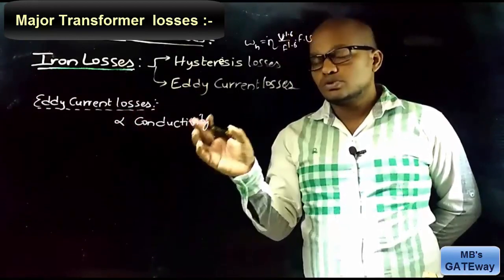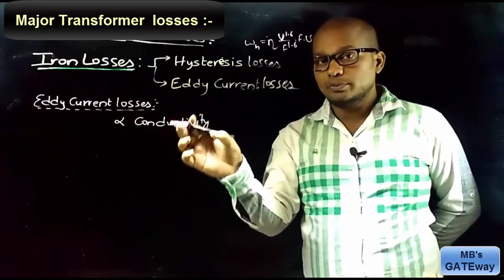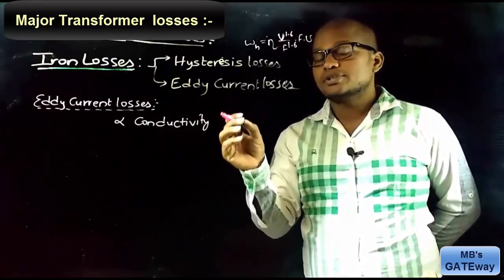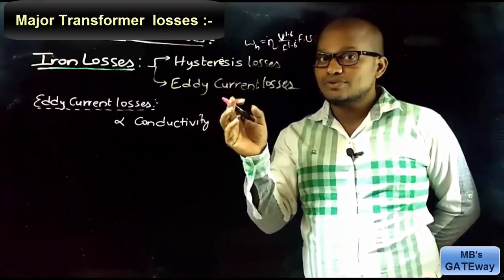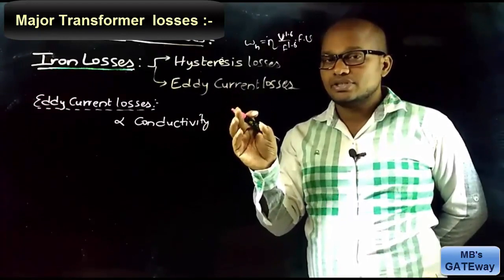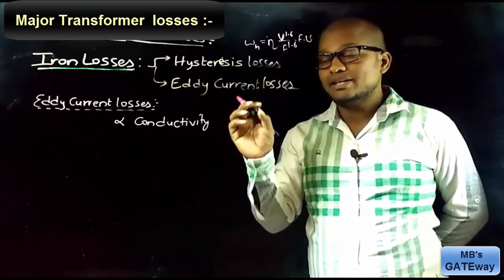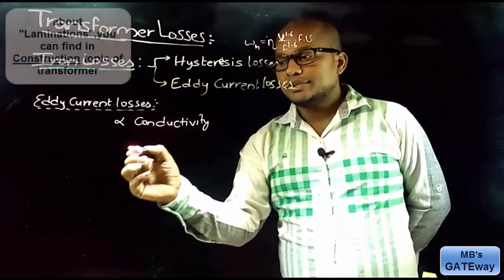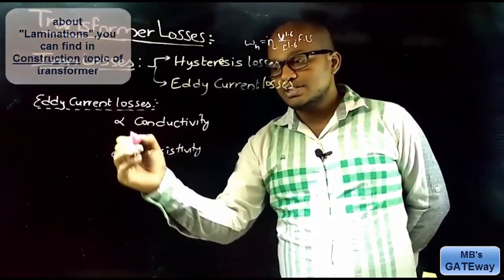Eddy current losses are directly proportional to the conductivity of the core material. To reduce eddy current losses we need to decrease the conductivity, i.e., increase the resistivity of core material. This is done by adding 3 to 4 percent silicon to the CRGO core material. However, adding silicon alone does not reduce eddy current losses to a large extent; they are much more reduced by laminating the core.